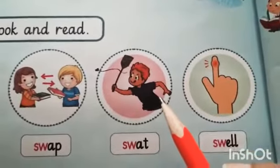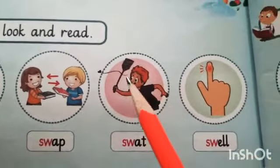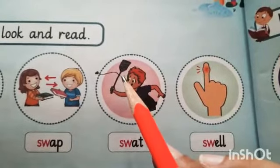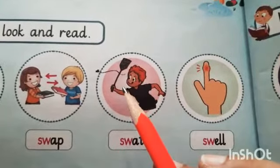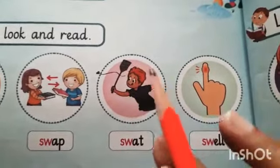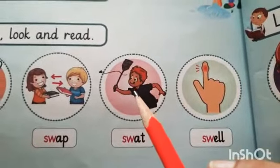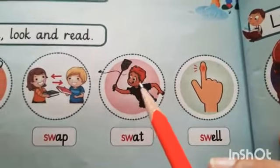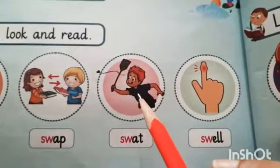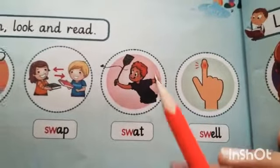And what is he doing? Just like jab machar maartay na, Bita — insect, mosquito ko maartay hai, makhiya ko maartay hai. Toh us maarnye waale action ko kehte hai — swat.